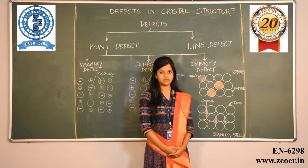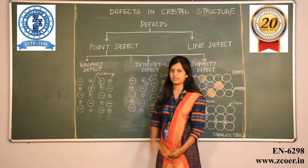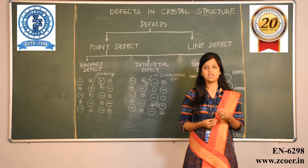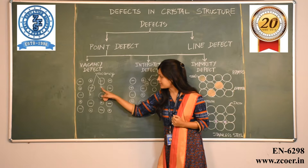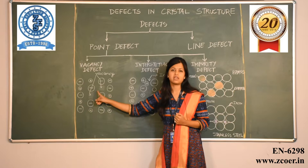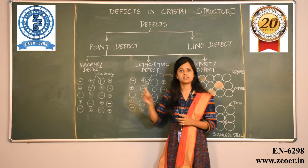Vacancy defects are formed during the process of crystallization. It may happen that some portions of the crystal are left vacant — there is no cation or anion in that particular location. As we can see in the diagram, certain positions are left vacant, and that is why this is called a vacancy defect.